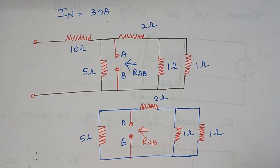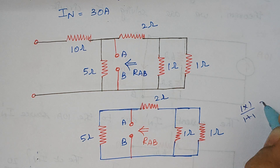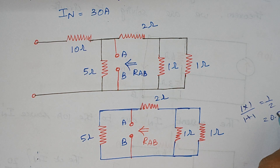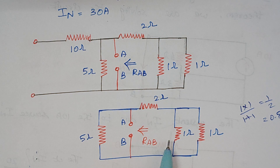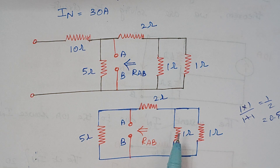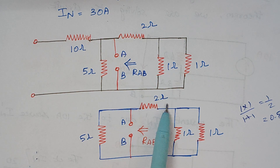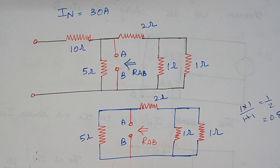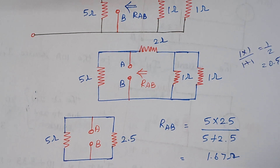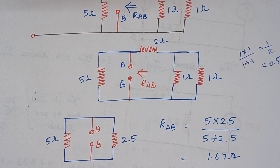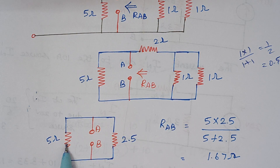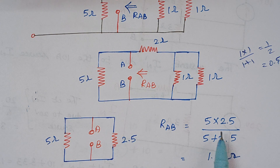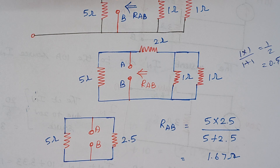That is a shortcut — you can also solve it as 1 times 1 divided by 1 plus 1 equals 0.5. So these two resistors combine to become 0.5, and that 0.5 ohm comes in series with this 2 ohm. So 2 plus 0.5 gives 2.5. Then the next thing is these two resistors are connected in parallel. Using the formula R1 times R2 divided by R1 plus R2, that gives the answer of 1.67 ohms.